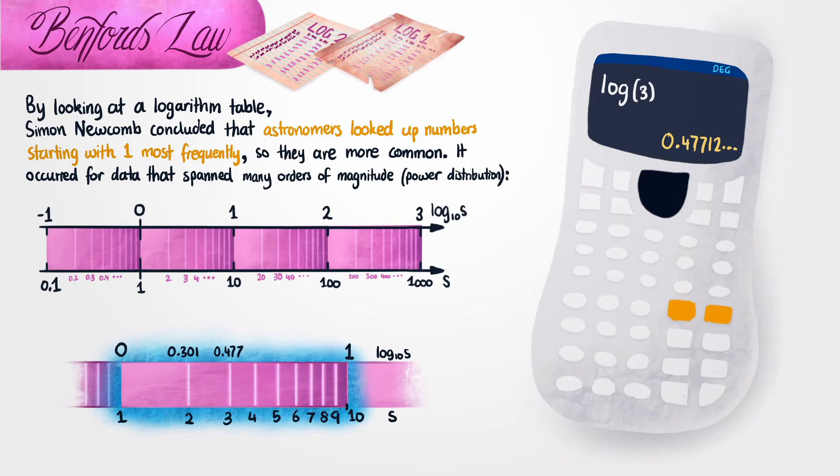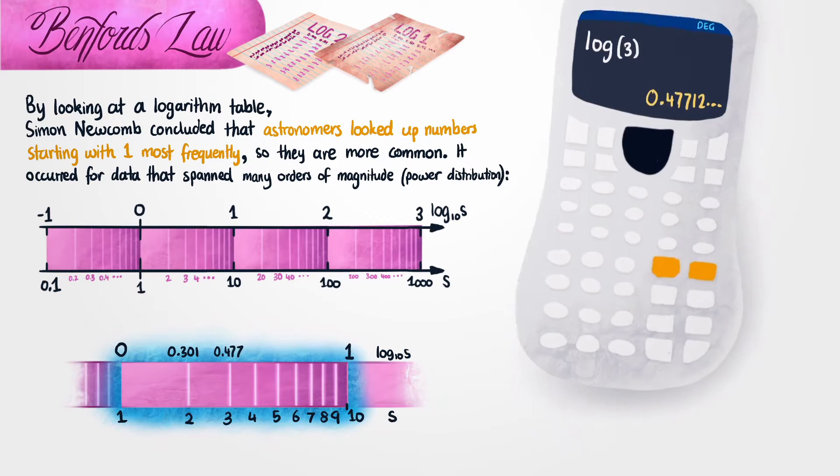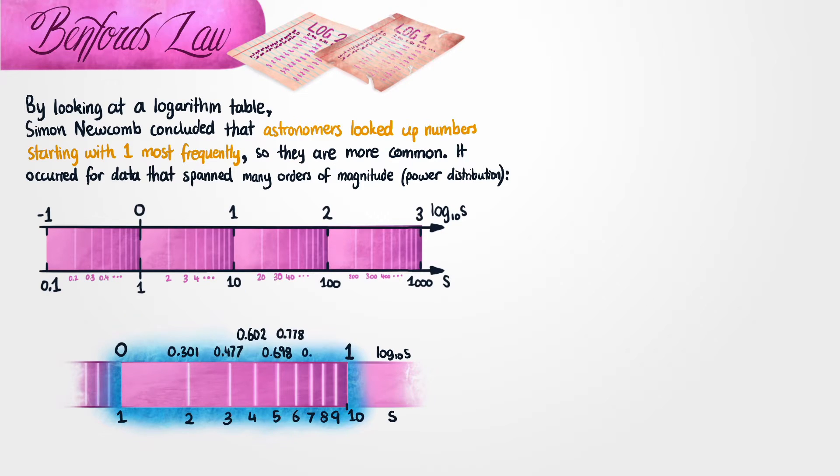Now at this point, we just keep typing all of these into a calculator to find their values, and then we can figure out where they actually go on the scale. You can see that 0.477 is approximately halfway between 0 and 1, and that's roughly where we've put it. So at this point, I'll just go ahead and write down all the values and I'll get rid of the calculator.